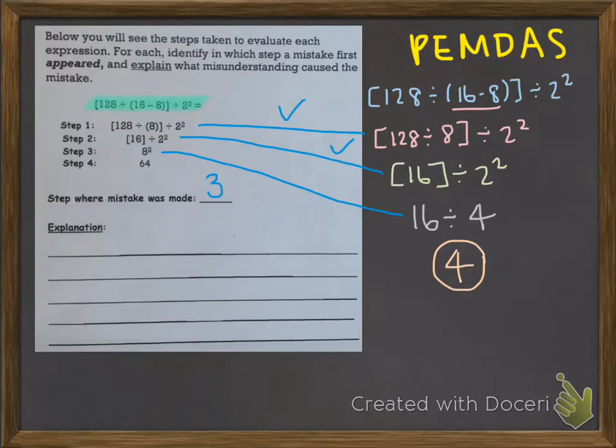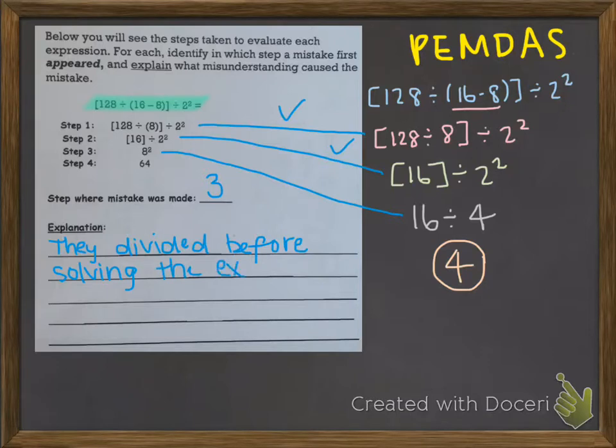Now, what they did incorrectly was they did 16 divided by 2 before they solved their exponent. So they divided before they solved their exponent. And in PEMDAS, you should always solve the exponents first.